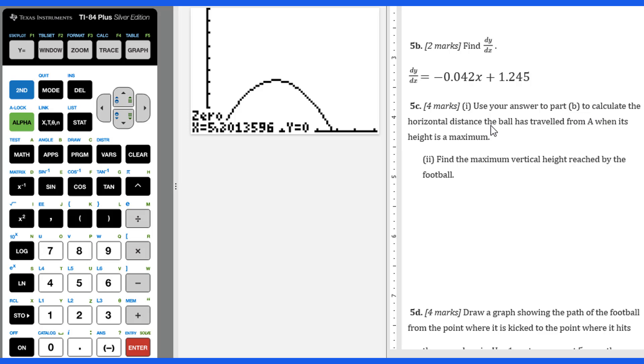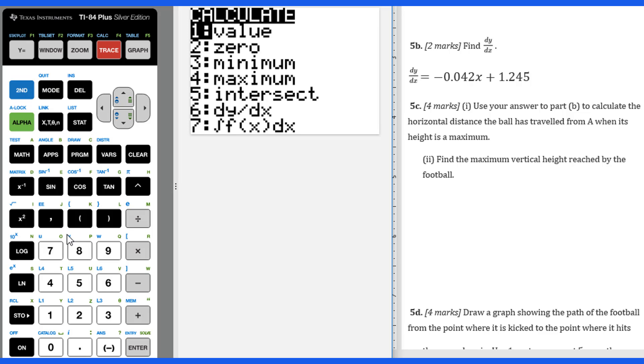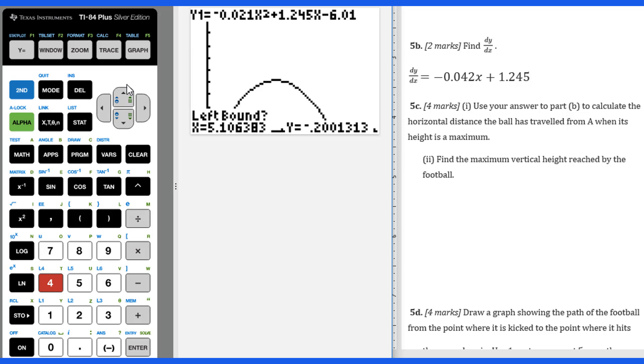For 5c, use your answer to part b to calculate the horizontal distance the ball has traveled from A when its height is a maximum point. You can use this dy/dx, or you can just figure out the maximum from the original function. I just use the original function, like y1 over here. I do second trace, 4, then I do left bound. Where is it? I couldn't see. Oh yeah, it's over here. So I do enter, then right bound. Enter, then enter.